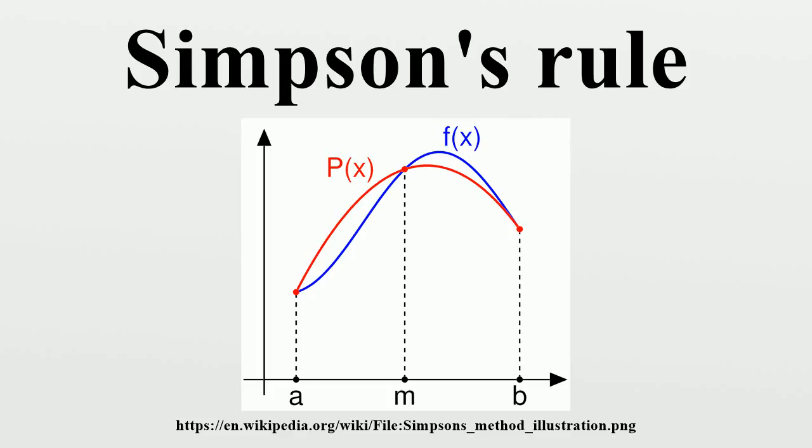The formula above is obtained by combining the original composite Simpson's rule with the one consisting in using Simpson's 3/8 rule in the extreme sub-intervals and the standard 3-point rule in the remaining sub-intervals. The result is then obtained by taking the mean of the two formulas.